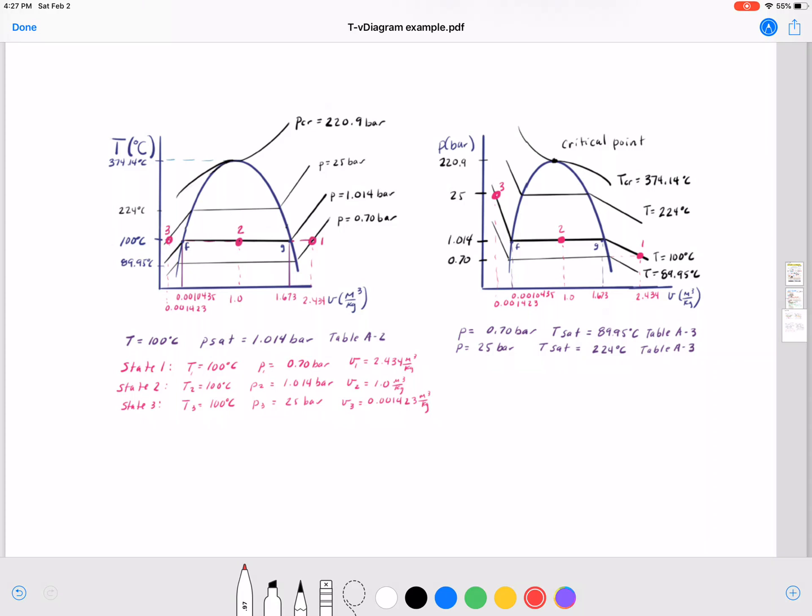And then the PV diagram over to the right here we can see our three states listed on there and the values of specific volume that relate to that and our isotherms, the temperature lines that match that.